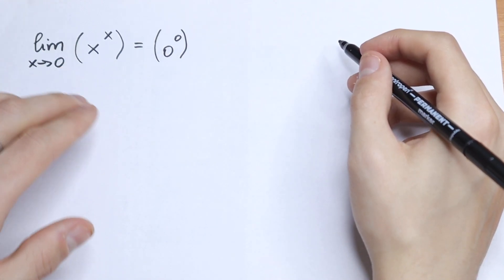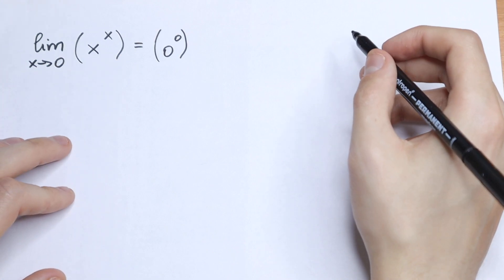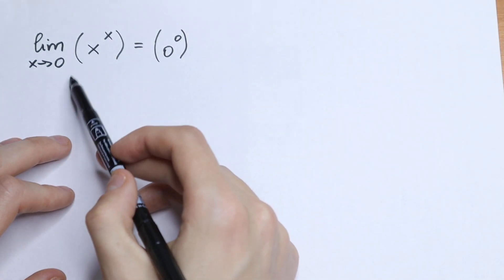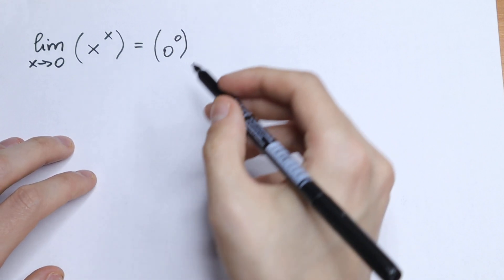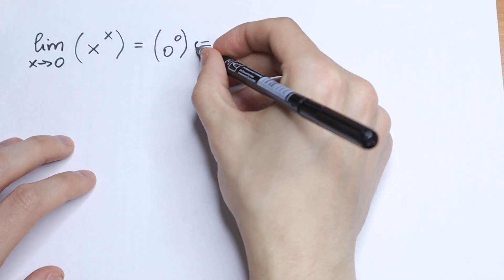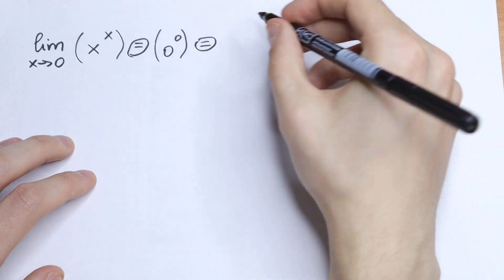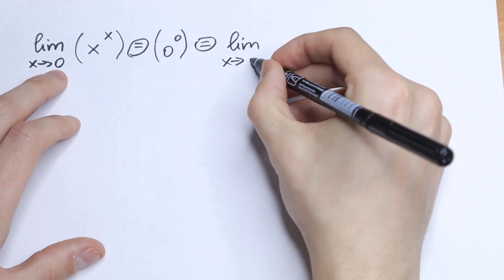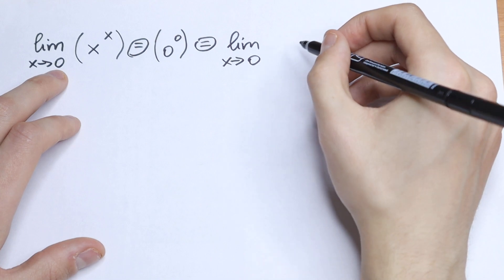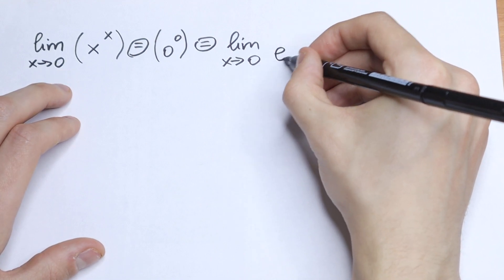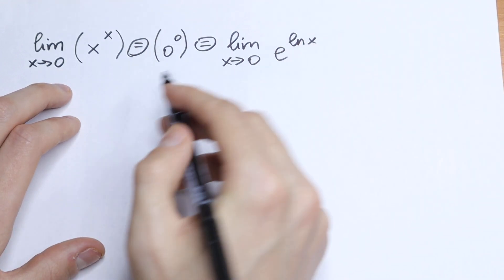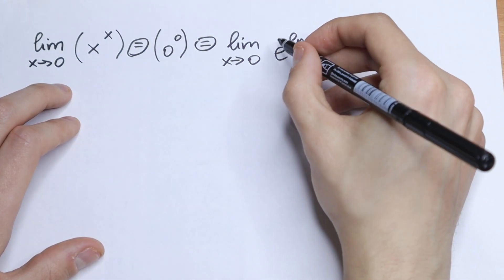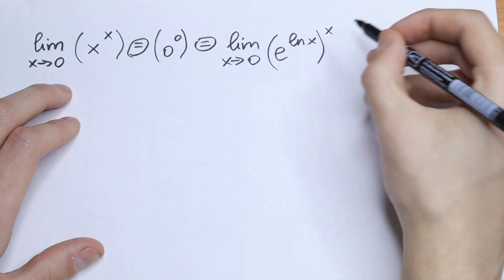So we need to simplify x to the power x. What I recommend is to write x as e to the power natural log x. So this limit will be equal to the limit as x approaches 0 of e to the power natural log x — this is our x — all raised to the power x.